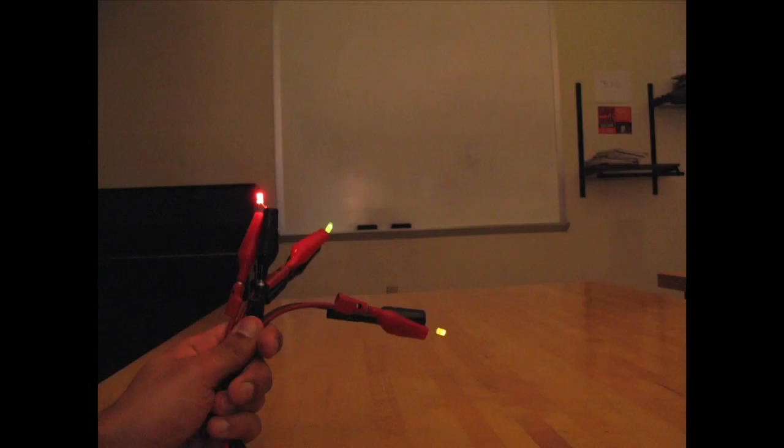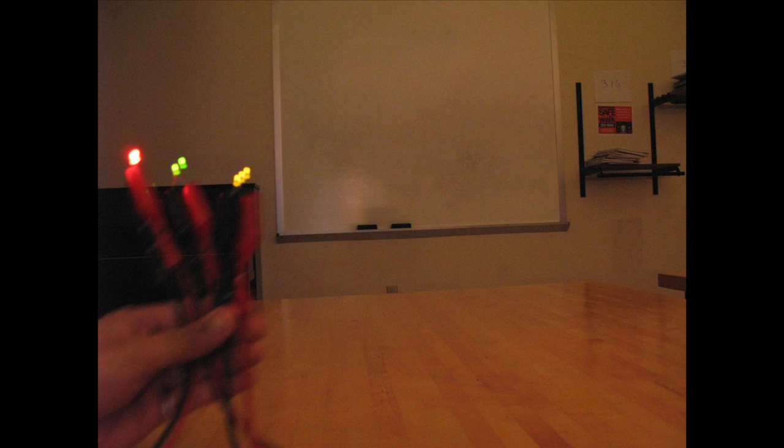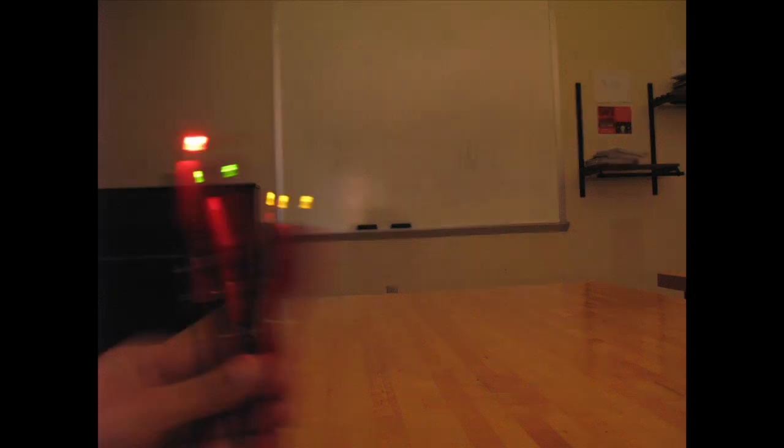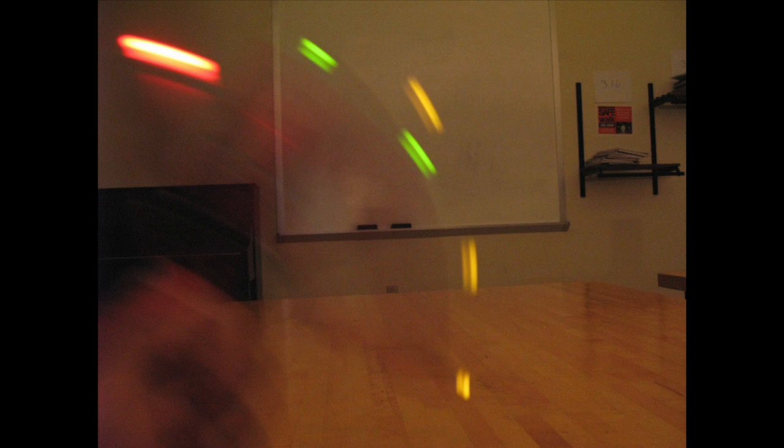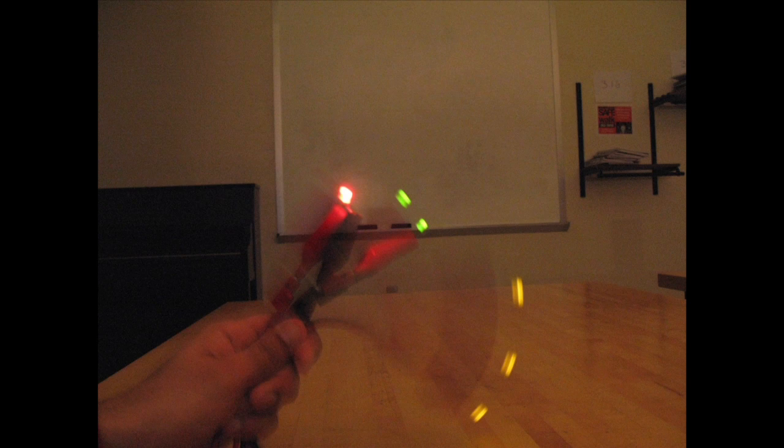In these photographs the exposure time is set to 1 tenth of a second. The red LED is on frequency of 10 Hertz, the green one on 20 Hertz and the yellow on 30 Hertz. That is why only one red dot is visible whereas there are 2 and 3 green and yellow dots respectively.